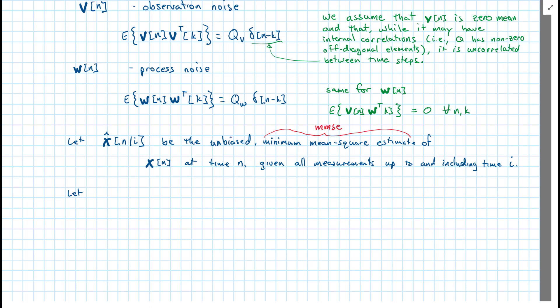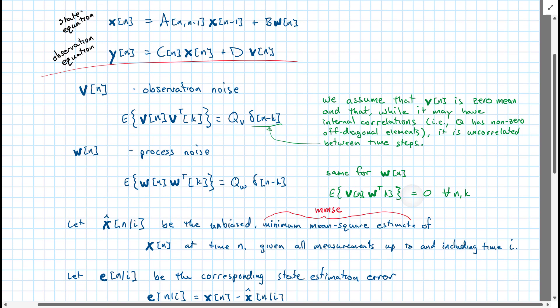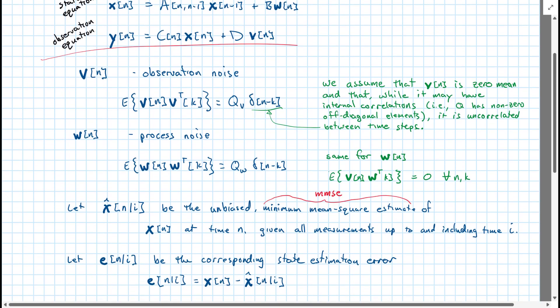we'll let e of n given i be the corresponding state estimation error. Okay, so now we've defined most of the quantities seen here. We've discussed what happens with W and V and our estimate x at different times. And of course, x is defined in and of itself.